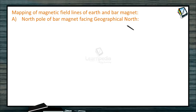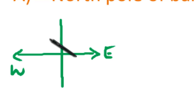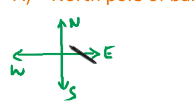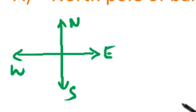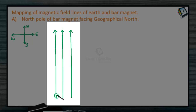Case one: north pole of the bar magnet facing geographical north. Taking east, west, north, and south as our reference directions — Earth's magnetic field lines extend from geographical south to geographical north. If we put a compass here, the north pole of the compass will point in the direction of geographical north.